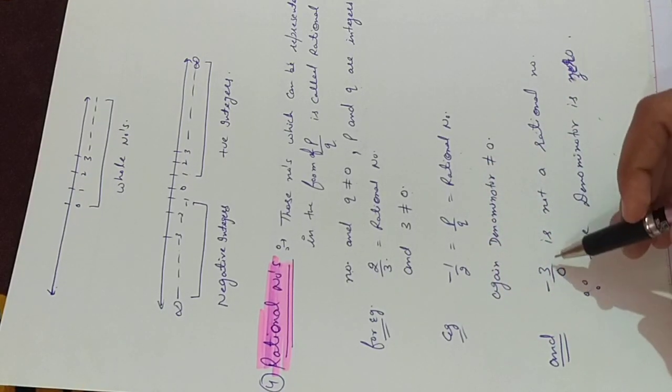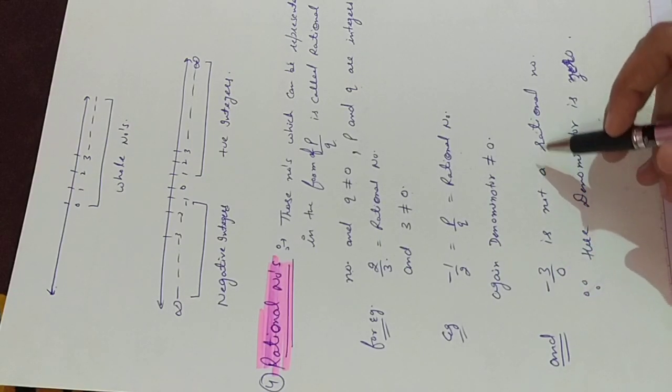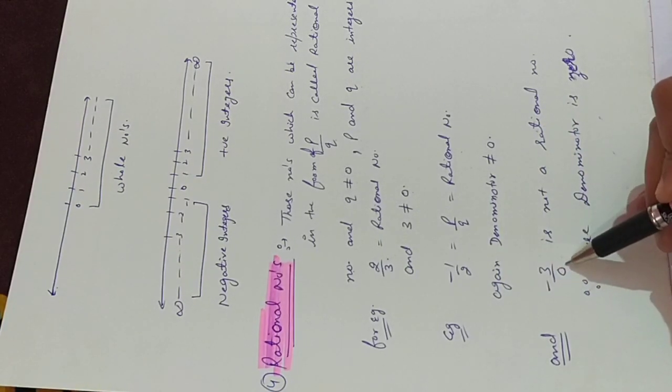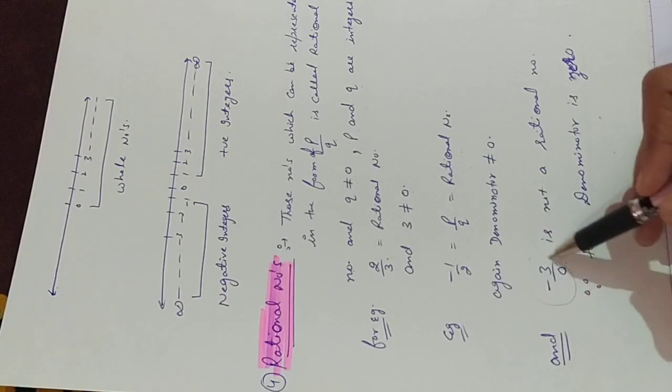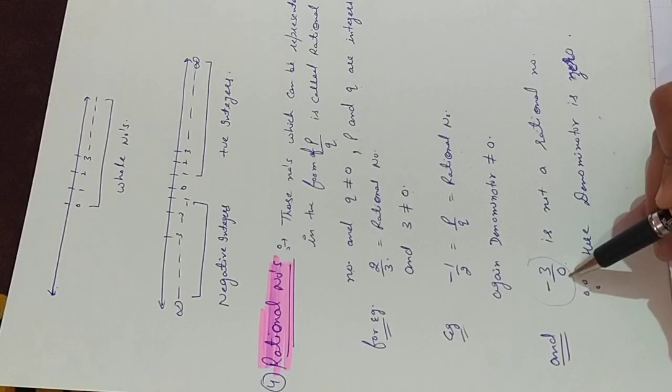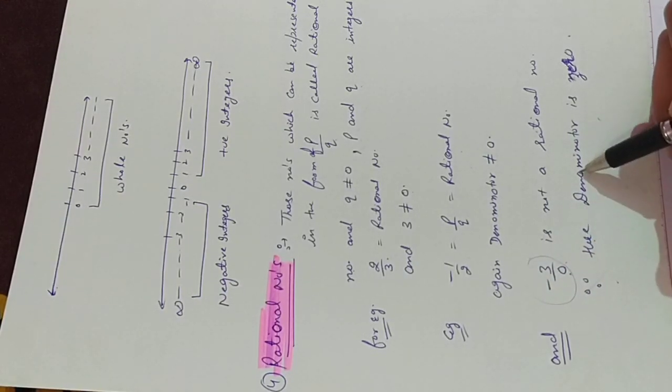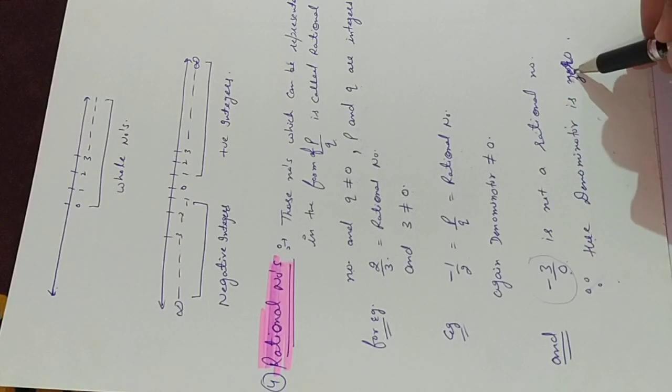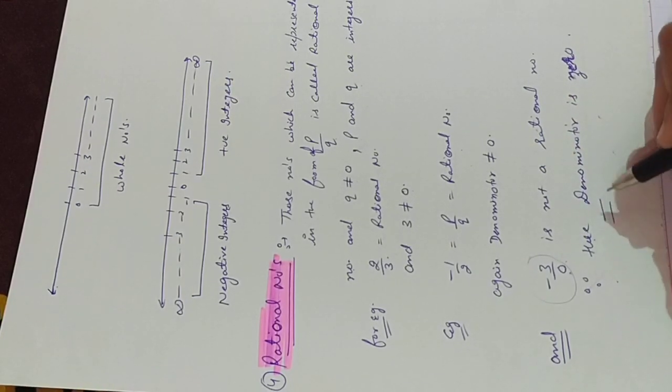And here is one example that is not a rational number: minus 3 upon 0. This is not a rational number. Why? Because here denominator is 0. Then this is not a rational number.